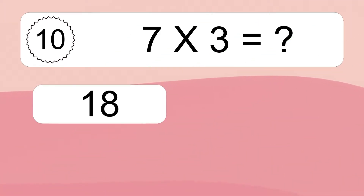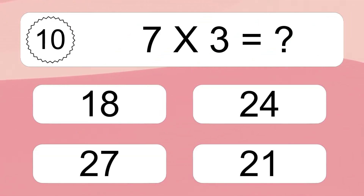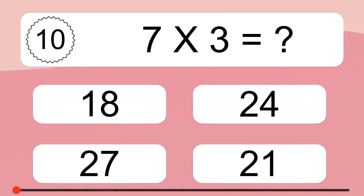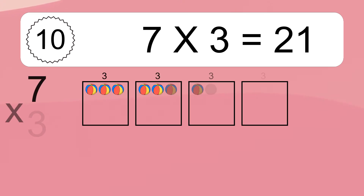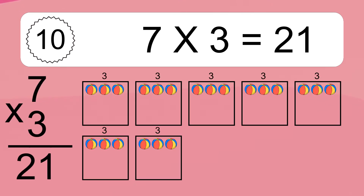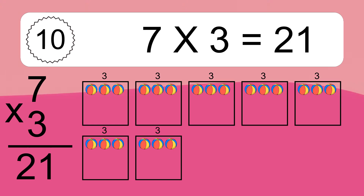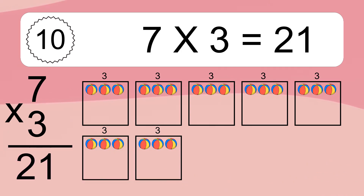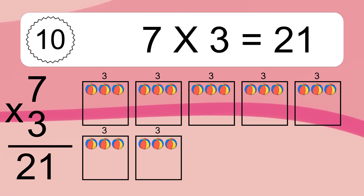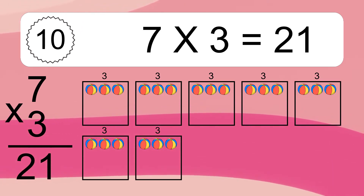7 times 3 equals what? We have 7 boxes, and each box has 3 colorful balls inside. If you count all the balls in all the boxes together, you will have 7 times 3 balls. This equals 21 balls.